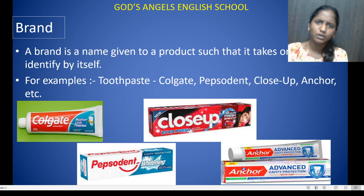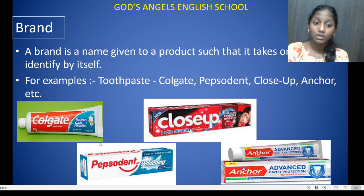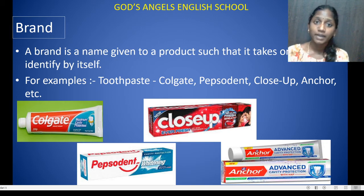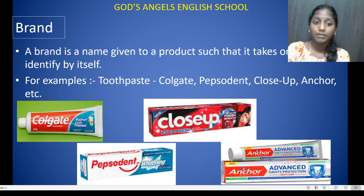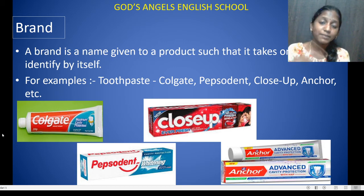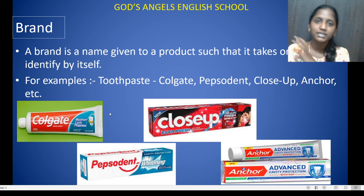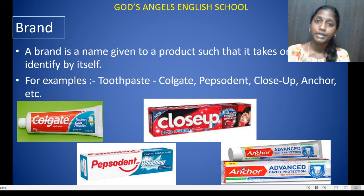There are many varieties of Colgate you can see — Colgate, Pepsodent, Closeup, Anchor. We know them by their names, and that is the brand. For example, Colgate paste is the product, and 'Colgate' — the spelling — that is the brand name.